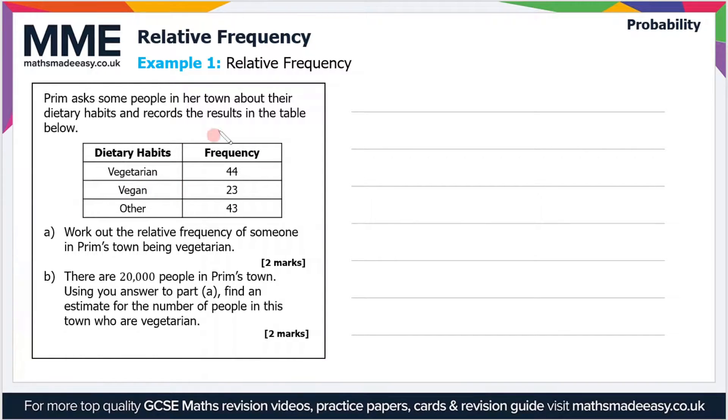For part a, we have to work out the relative frequency of someone in Prim's town being vegetarian. Now we need to first work out the total number of people that she's asked, so we've got to add the frequency column together. That is 44 plus 23 plus 43, and if you do that calculation, that's 110.